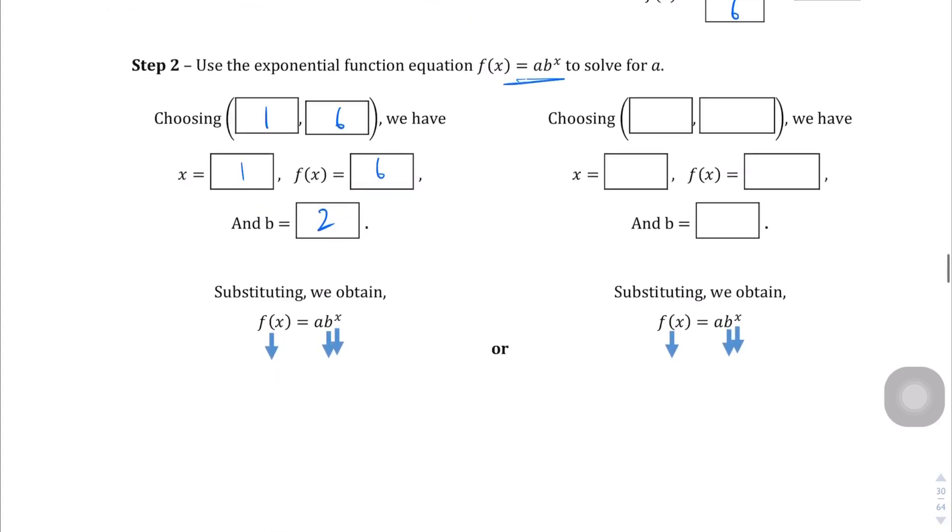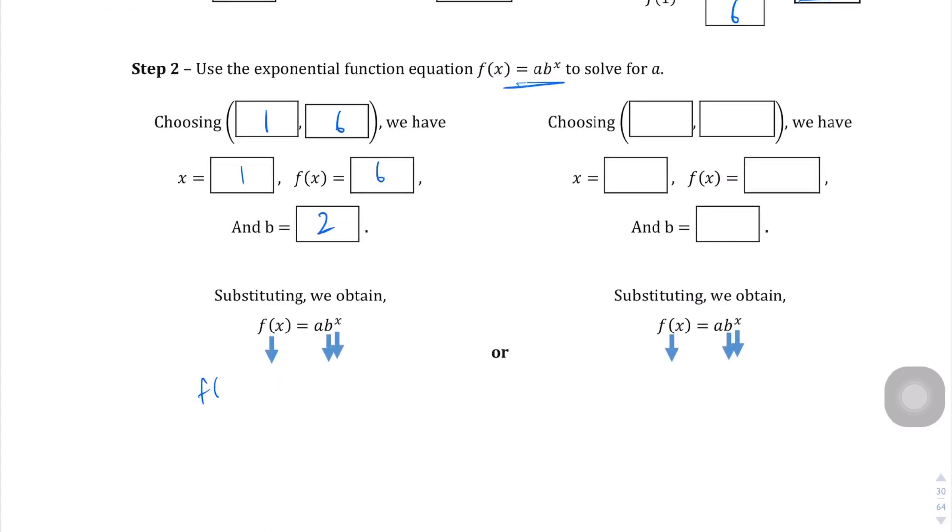And so if we substitute everything, we obtain f of 1 is equal to a times b, or not b in this case, 2, because b equals 2 in this case, to the power of x, which is 1. Oh, I forgot one thing. Not f of 1, f of x equals 6 equals a times 2 to the 1. So let's find out what a equals, and 2 to the power of 1 is just 2. So 2a divided by 2, divided by 2. So we get 3 equals a.